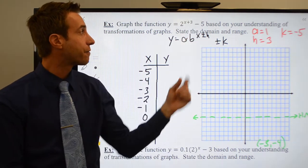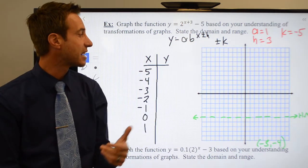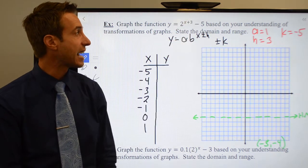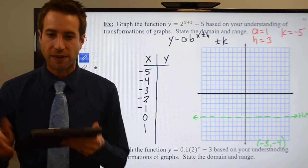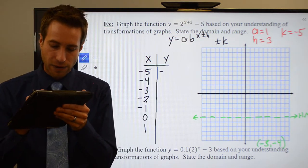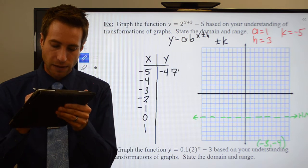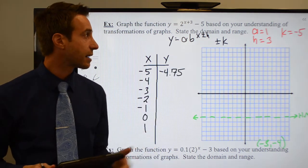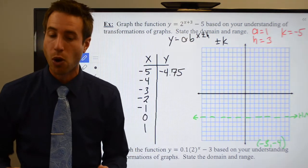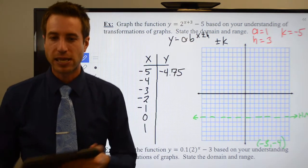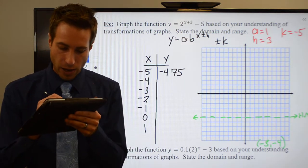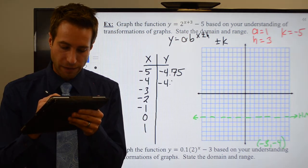I plug a negative five in for x. Negative five plus three is going to be a negative two. Two to the negative second, and then subtract five, you wind up with negative four point seven five. Do the exact same thing for negative four. Plug in a negative four plus three would be a minus one. Two to the negative first, and then subtract five, you wind up with negative four point five.